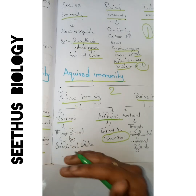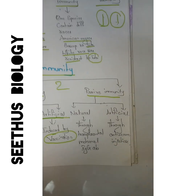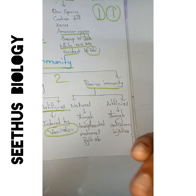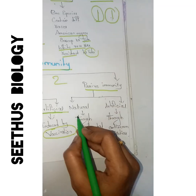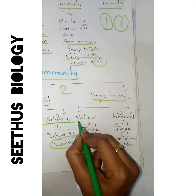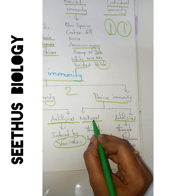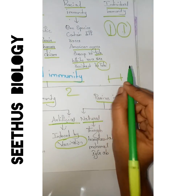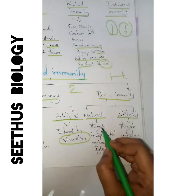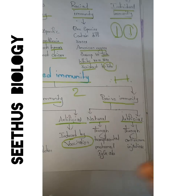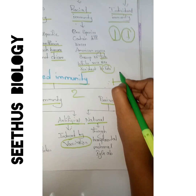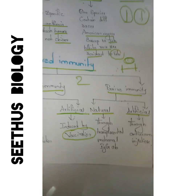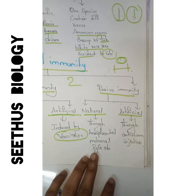Passive immunity — as already mentioned — involves injecting antibodies from an artificial source into our body, boosting immunity from outside. Passive immunity is also split into natural and artificial types. Natural passive immunity is transferred from mother to child through the placental route via maternal IgG antibodies, and also through feeding, where the mother's IgG antibodies are transferred to the baby.